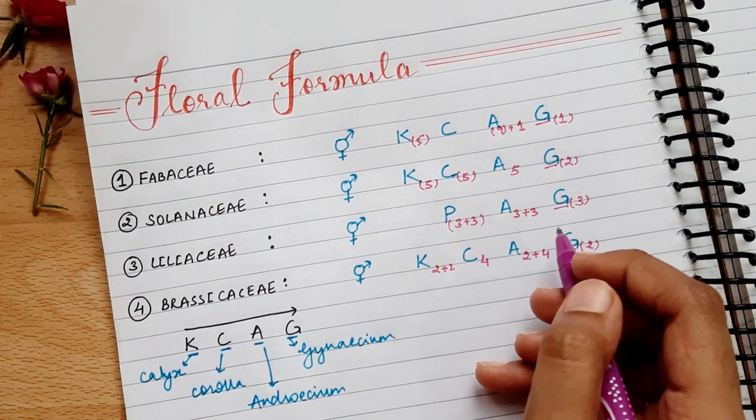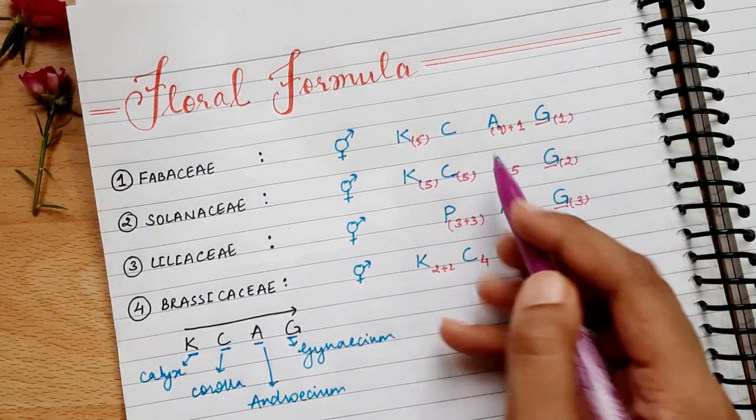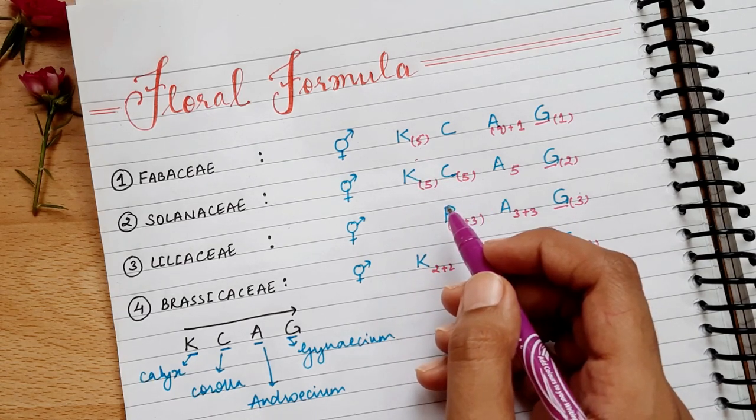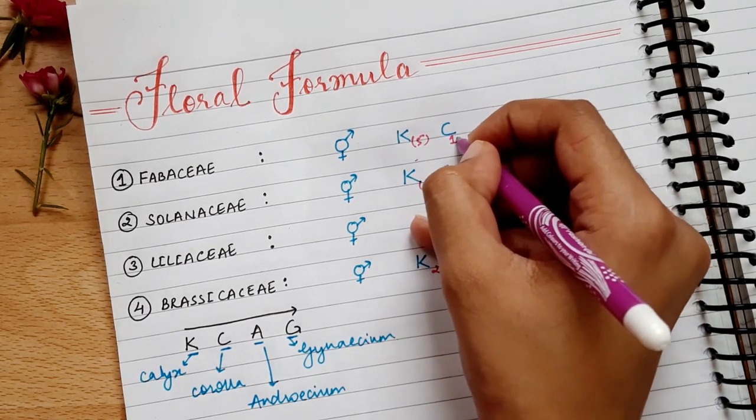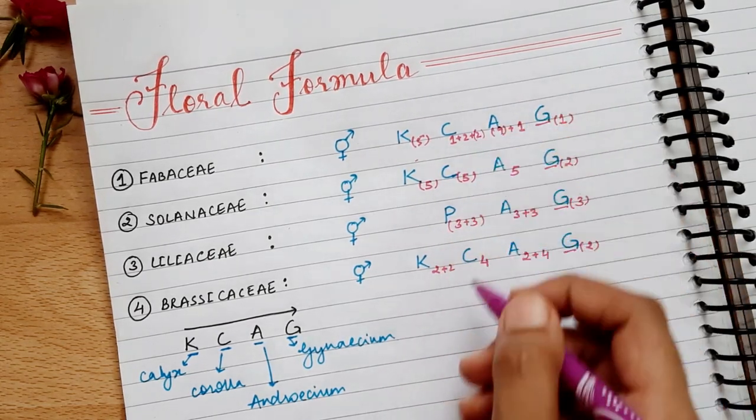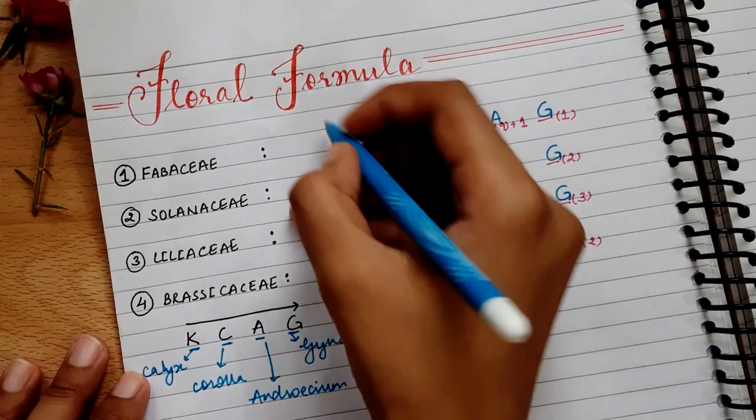Now for this C, we will write it 5. So for this 5, we will write it 5. And the rest is 2 plus 2. And we will write it 2 plus 2.